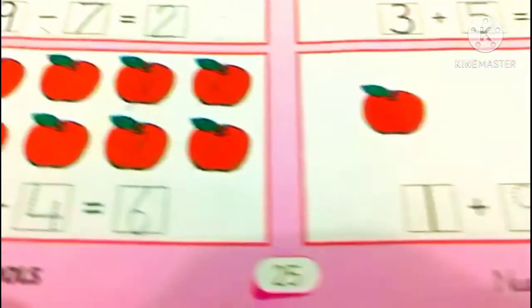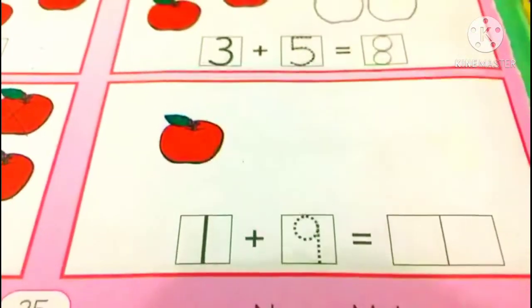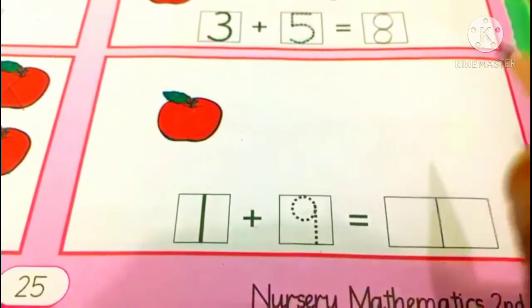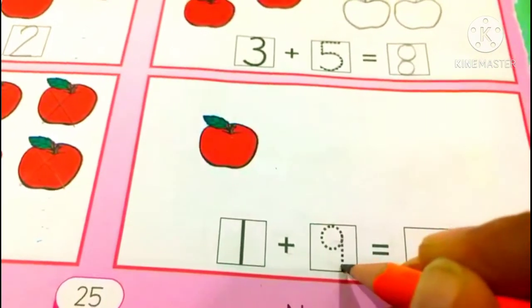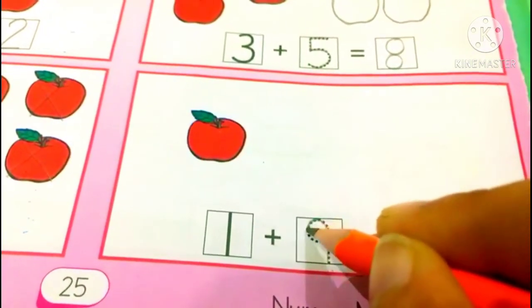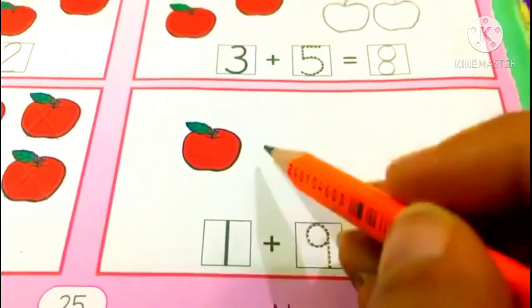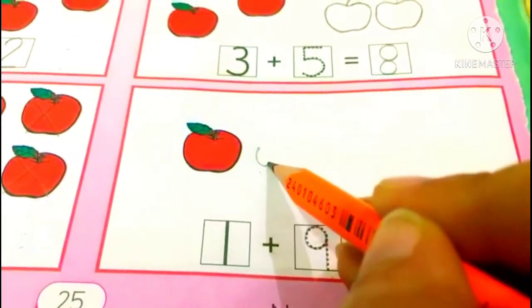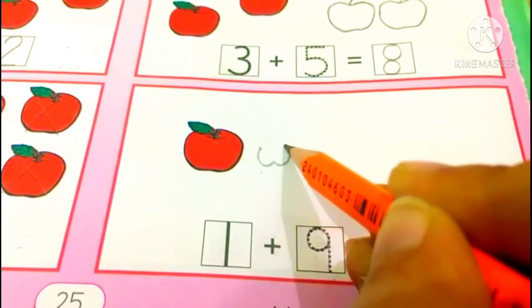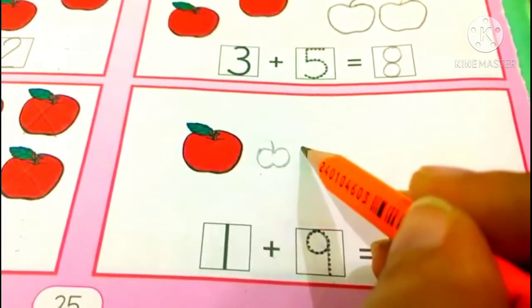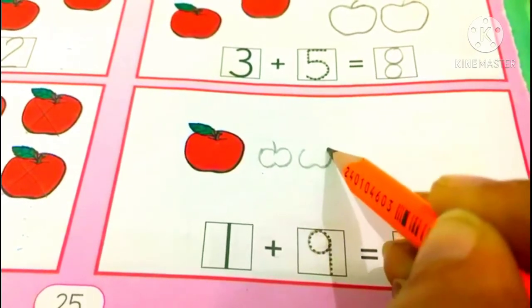Okay students, now look at the next box. How many apples? Only 1 apple is there. We have to add 9 more. Let's trace 9 in the box. Then we will draw 9 more apples. 1 apple is already made for you. And you will make small 9 apples. Then we will count how many will be altogether. So let's make apples.